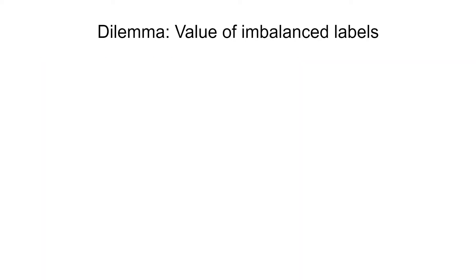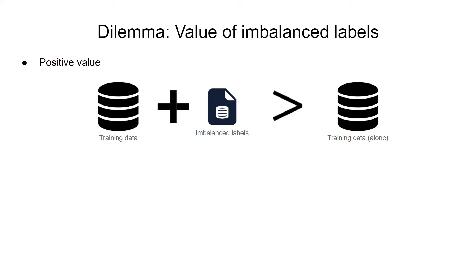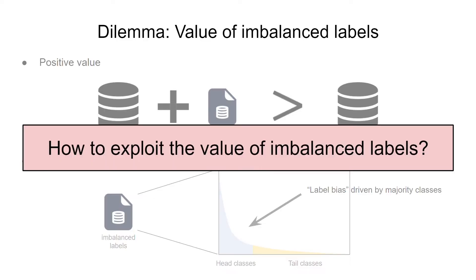Yet, different from balanced data, in class imbalance learning there is an interesting dilemma on the value of the imbalanced labels. First, supervision from labels typically leads to better results than its unsupervised counterparts, demonstrating the positive value of imbalanced labels. However, heavily imbalanced data naturally incur label bias in the classifier, where the decision boundary can be drastically altered by the majority classes, showing the negative impact of labels. Hence, the imbalanced label seems to be a double-edged sword. So, how can we maximally exploit the value of labels to improve class imbalance learning?